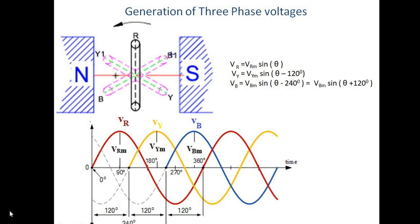In a 3-phase system, the armature is divided into 3 coils or 3 windings. They generate equal voltages but have a phase difference of 120 degrees. The phase difference equals the rotation angle divided by the number of phases. One rotation is 360 degrees, so 360 divided by 3 gives a phase difference of 120 degrees. So in a 3-phase system, all 3 voltages have the same magnitude but are 120 degrees phase shift apart.